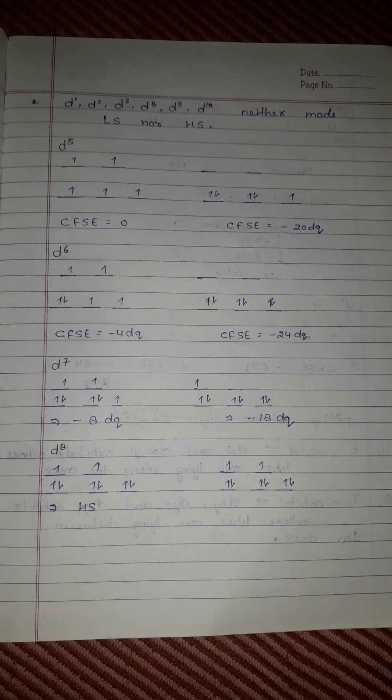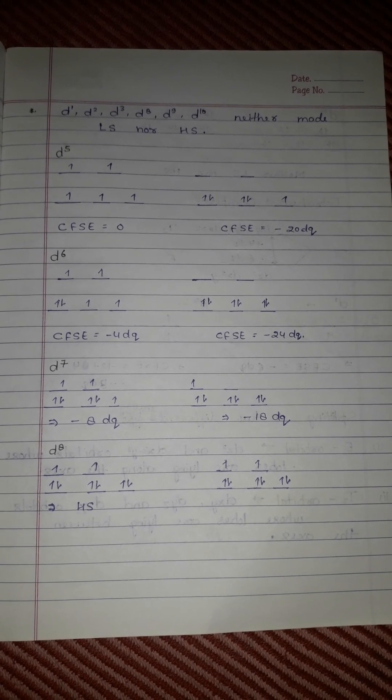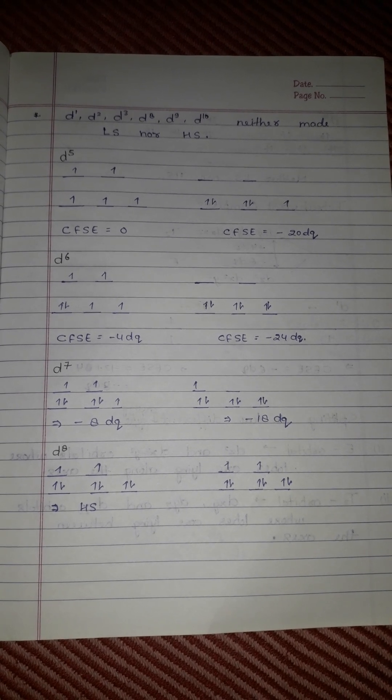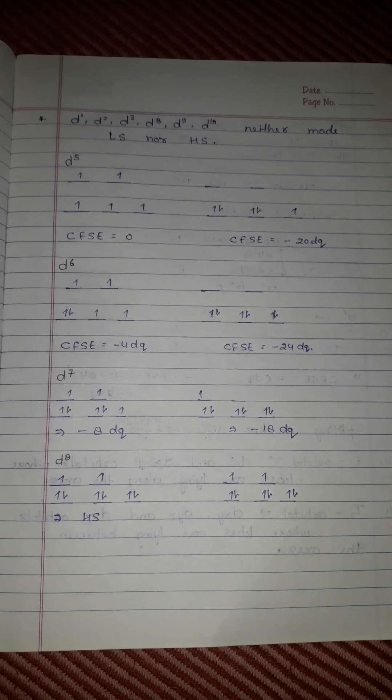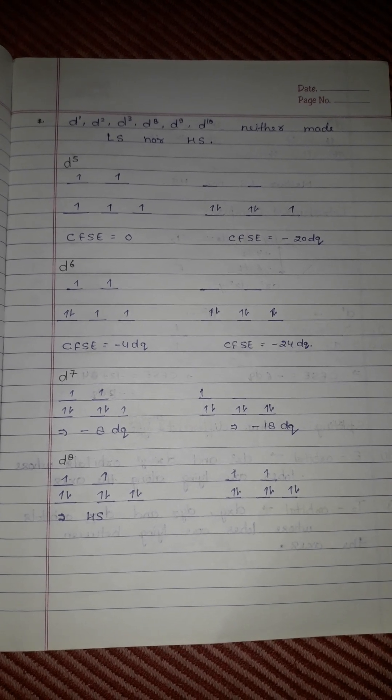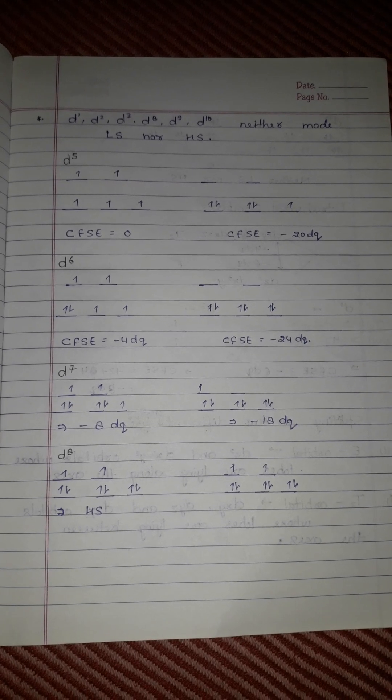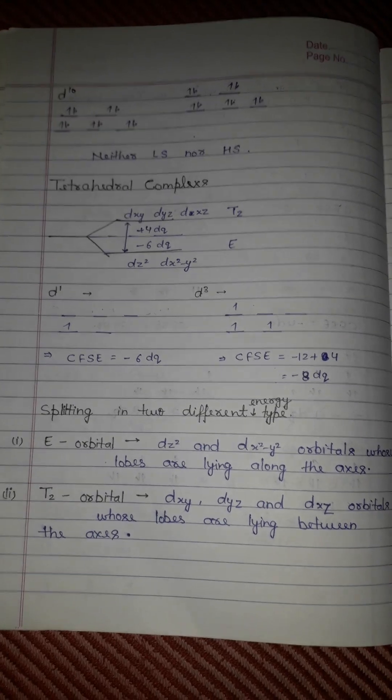For d¹, d², d³, d⁸, d⁹, and d¹⁰ configurations, there is neither low spin nor high spin possibility. Only d⁴, d⁵, d⁶, and d⁷ can exhibit low spin or high spin states in octahedral complexes.